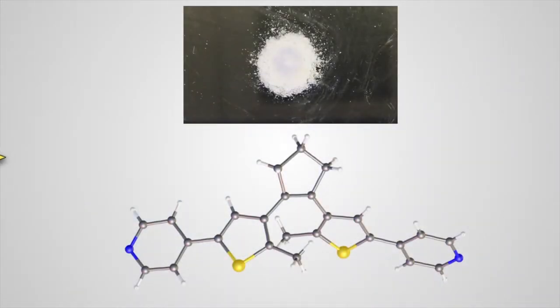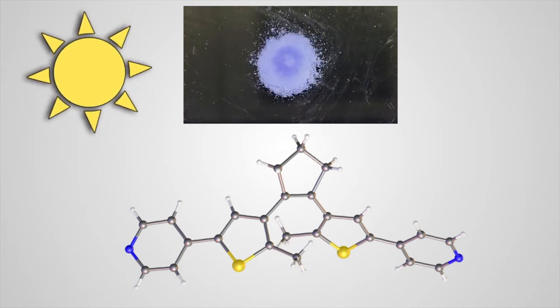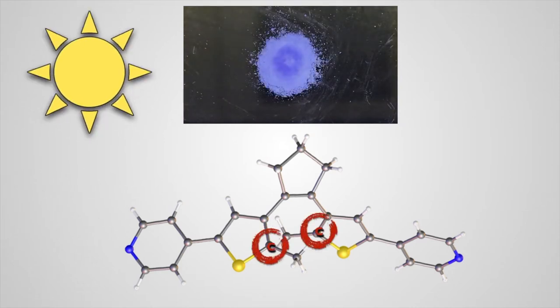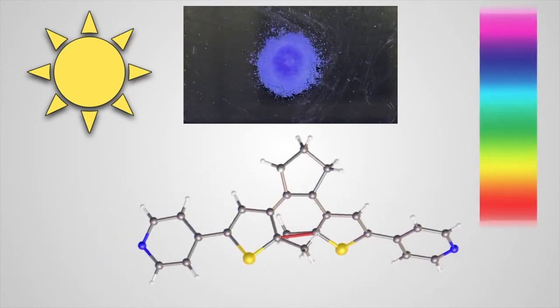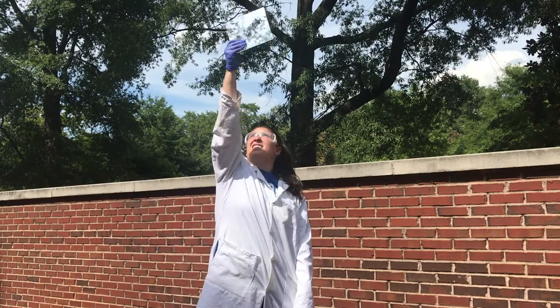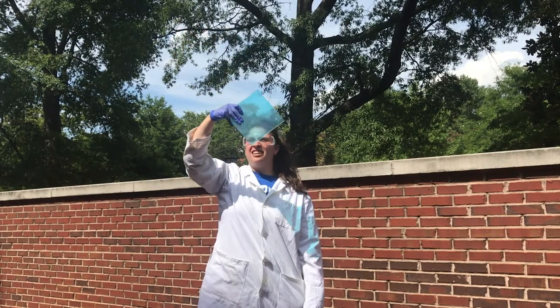Now we will explain how it works. This is our photochromic molecule. When there is no UV light, it is colorless. Upon irradiation with UV light, a bond between two carbon atoms appears, and due to this photoisomerization, the absorption profile of the molecule goes from the UV to the visible part of the spectrum and a color change occurs. This can be used in the development of smart windows, which can change colors depending on external stimuli.